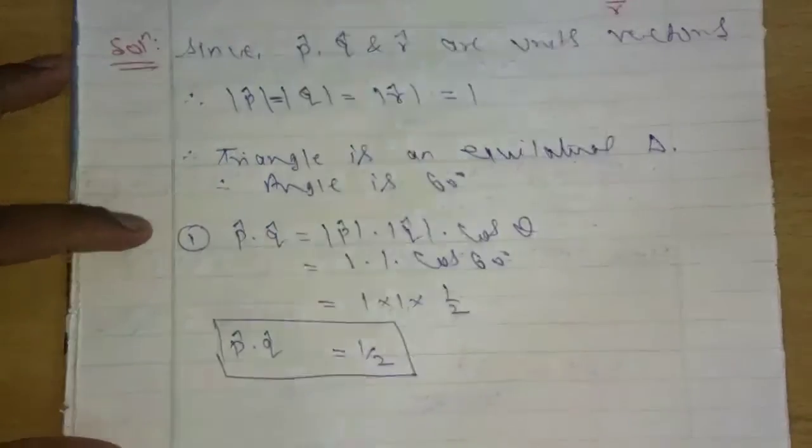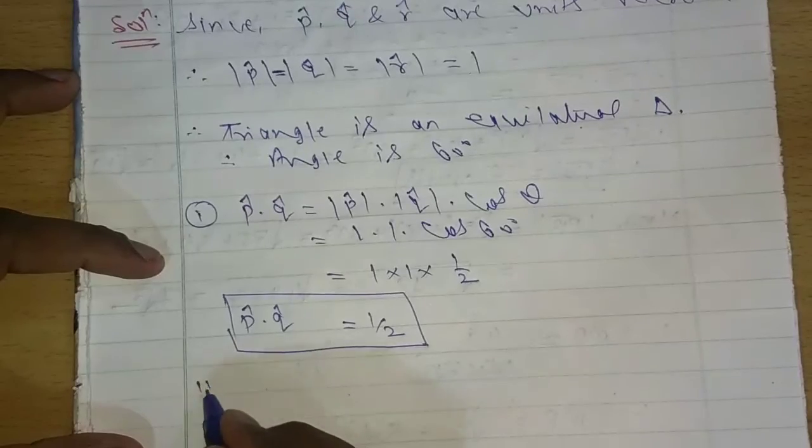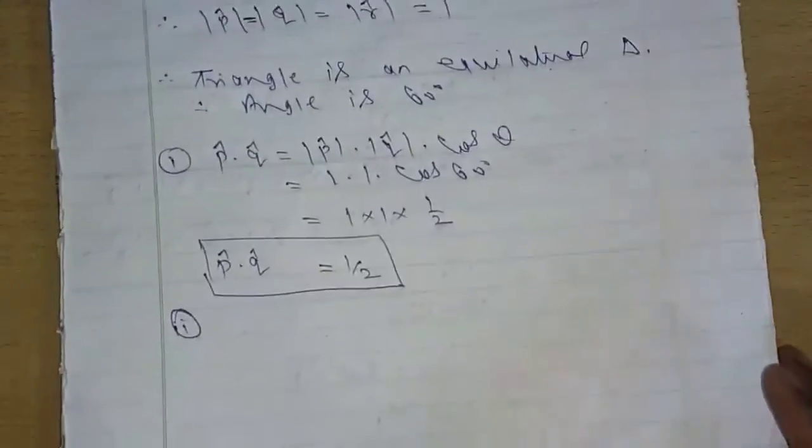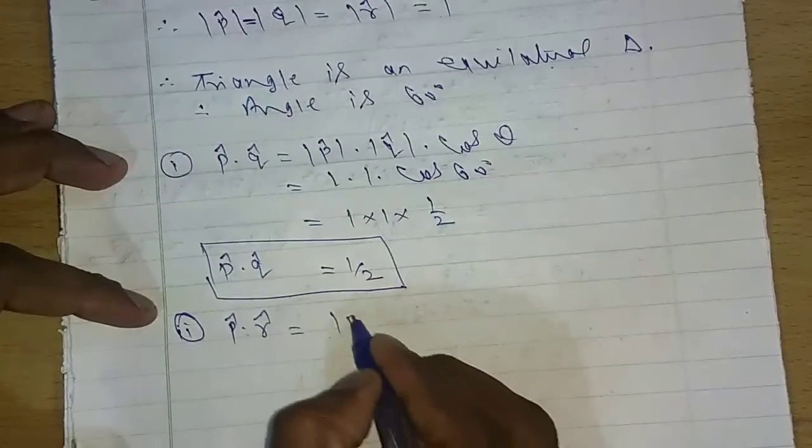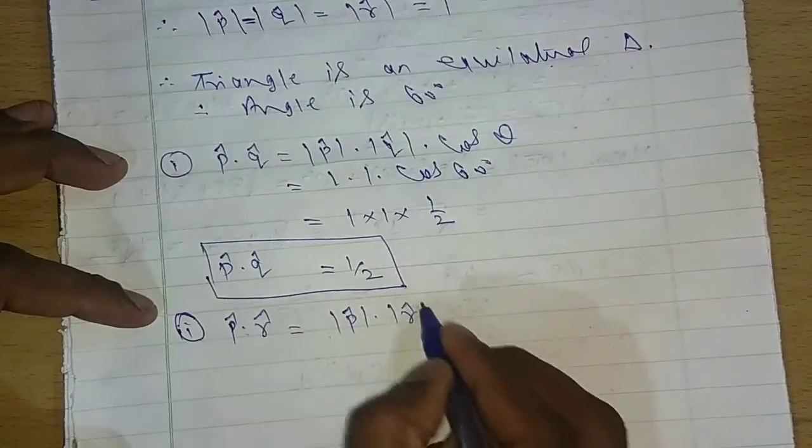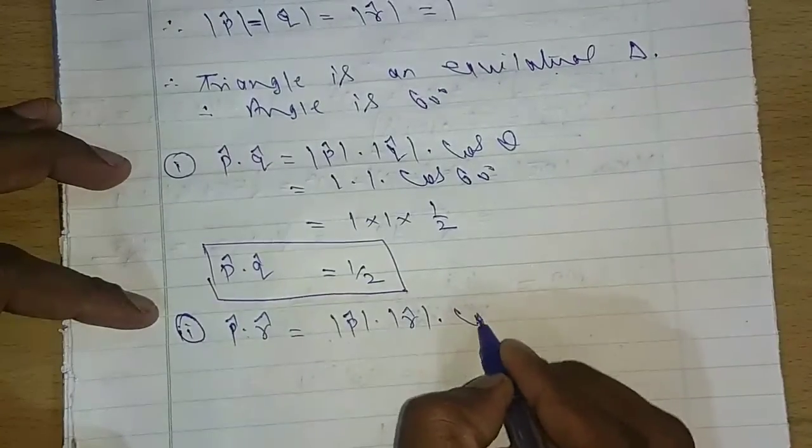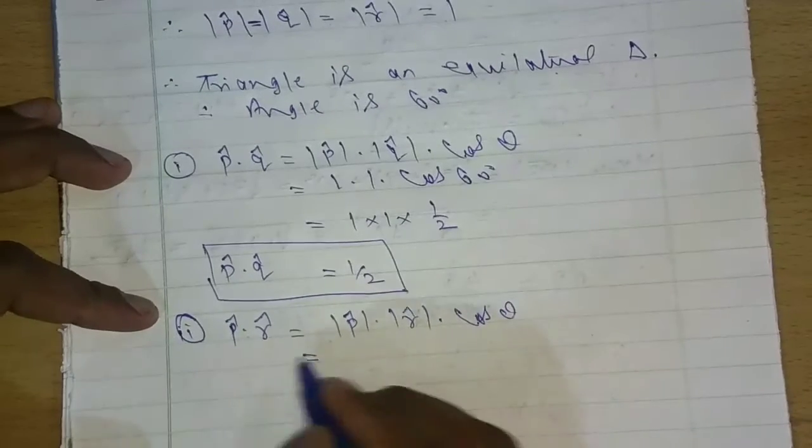Similarly, second one, we have p cap dot r cap here. P cap dot r cap is also p cap magnitude times r cap magnitude times cos theta. This is equal to what?